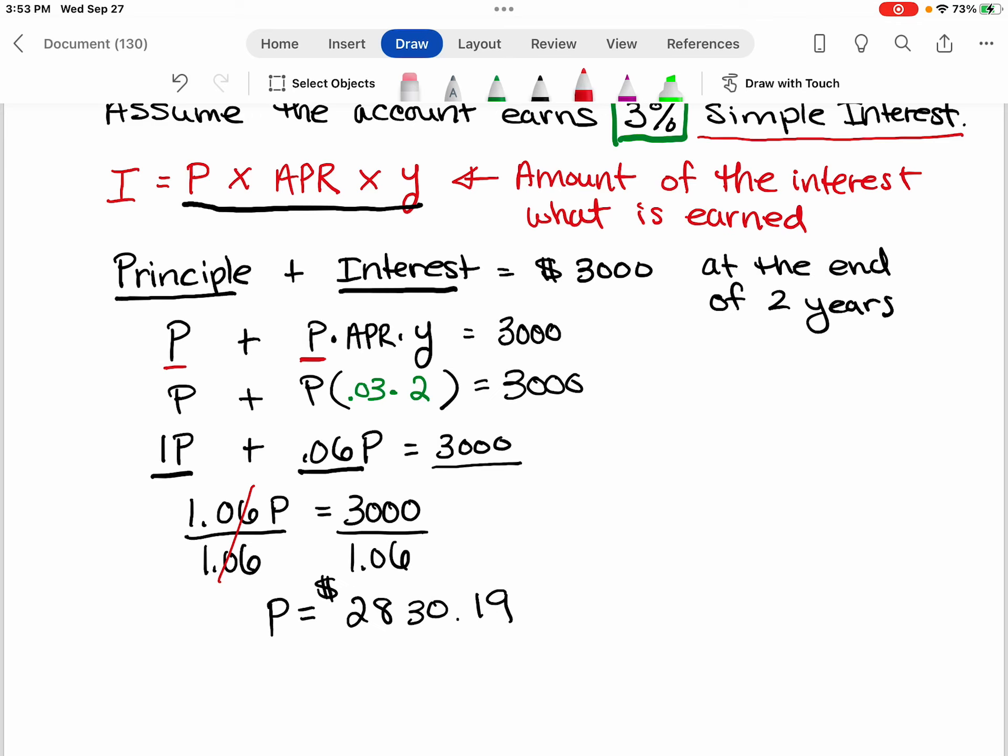So what this tells me is if I deposit 2,830 and 19 cents into this bank that gives 3% simple interest at the end of the two years, I would have earned interest so that the total gives me the 3000. So I have that 3000 at the end of the two years.